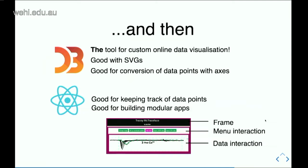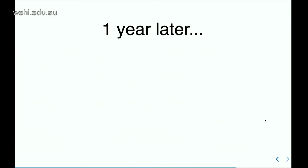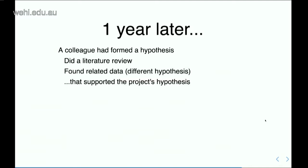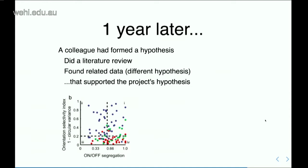That's all the technical stuff. One year later, I told people about this and some people started using it. This is my favorite story: a colleague had formed a hypothesis, did a literature review, and ran into the same things I ran into — 2D plots without linked data. He found related data collected under a different research question, but thought it might be useful for his hypothesis. With pencil and ruler, tracing each of those data points might be a bit of a pain.